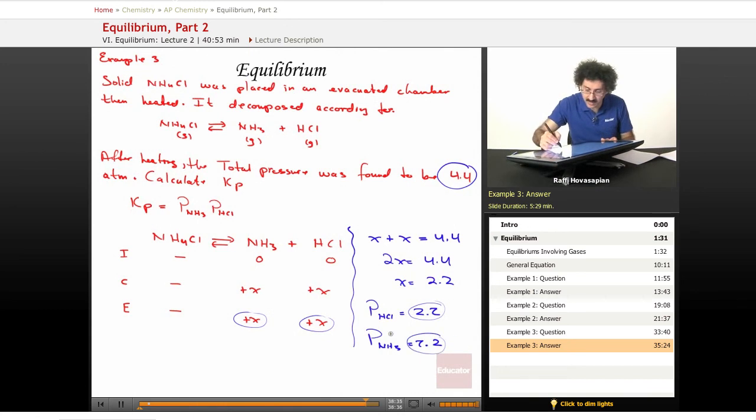These numbers are the ones that I put back in here. So Kp equals 2.2 times... Okay, now watch this. Even though 2.2 and 2.2 is the same, please don't write 2.2 squared. They're different species. I promise you, if you write 2.2 squared, and if somewhere along the way you get lost and you have to come back, you'll spend five minutes trying to figure out what happened.